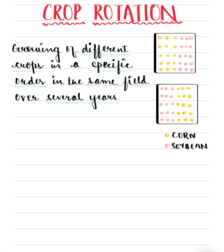Hello everyone. In this video I will be talking about crop rotation. It is a farming technique that involves growing different crops in a specific order in the same field for several years.